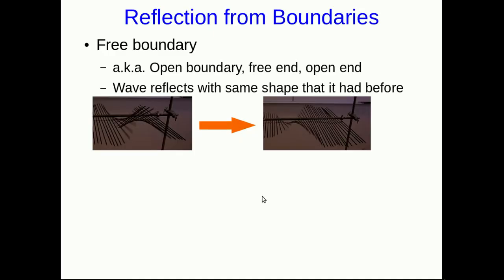So as we've just seen, when we have a free boundary or an open boundary, the wave reflects off the end and it reflects with the same shape that it had before. I'll just superimpose the curve and the directions of travel showing this. Note how in this case, the wave is reducing in size — that's telling us that this isn't a perfect free boundary; there's a little bit of friction.